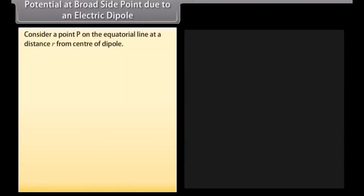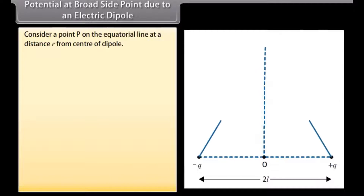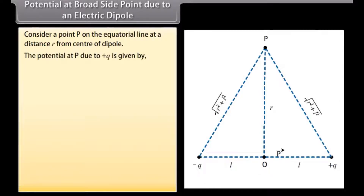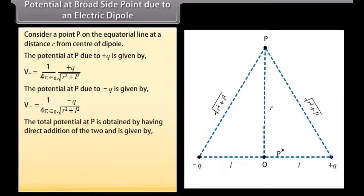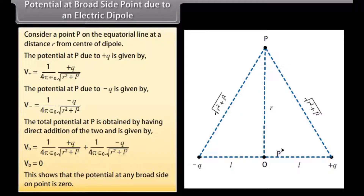Potential at a broadside point due to an electric dipole: Consider a point P on the equatorial line at a distance R from the center of the dipole. The potential at P due to plus Q is V positive equals one upon four pi epsilon naught multiplied by Q upon the square root of R squared plus L squared. The total potential at P is VB equals zero. This shows that the potential at any broadside-on point is zero.